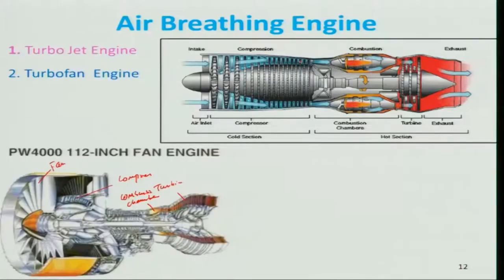There will be an increase in total pressure in the compressor. The total pressure will remain nearly constant in the intake, but slightly lower due to losses. The objective is to minimize total pressure change in compressor and turbine. In the turbine, total pressure must decrease because work is extracted from the gas.